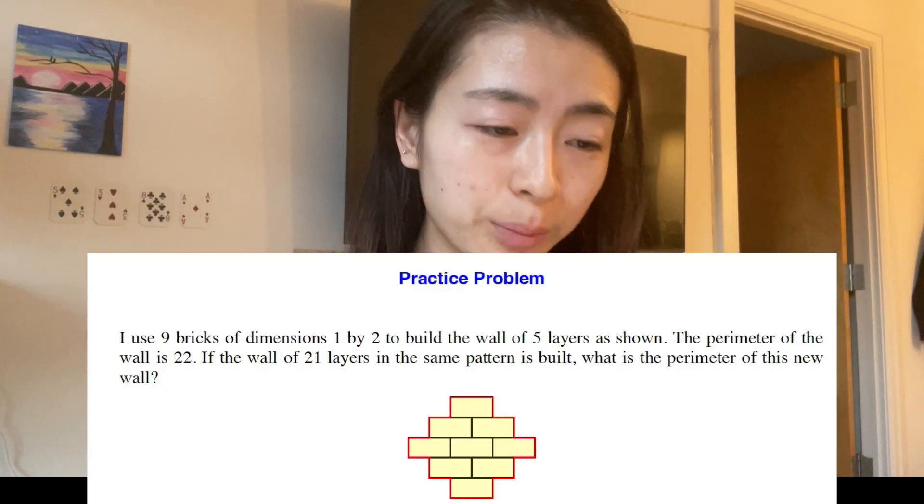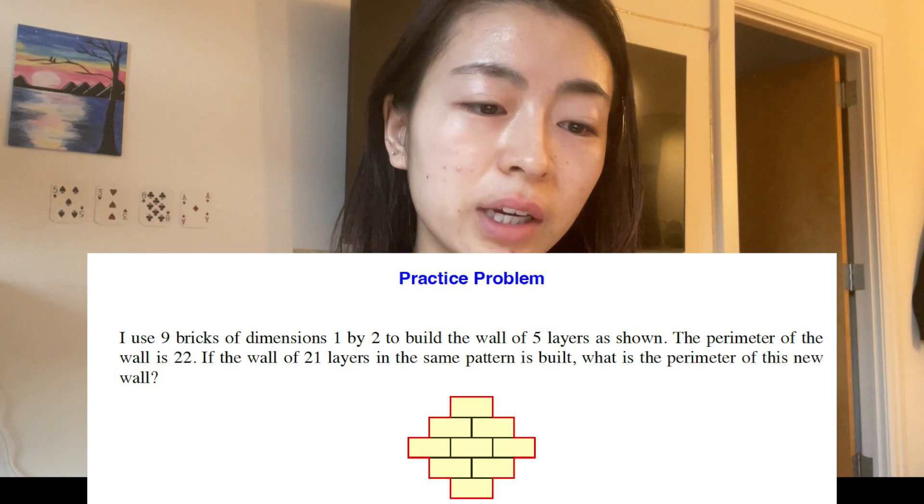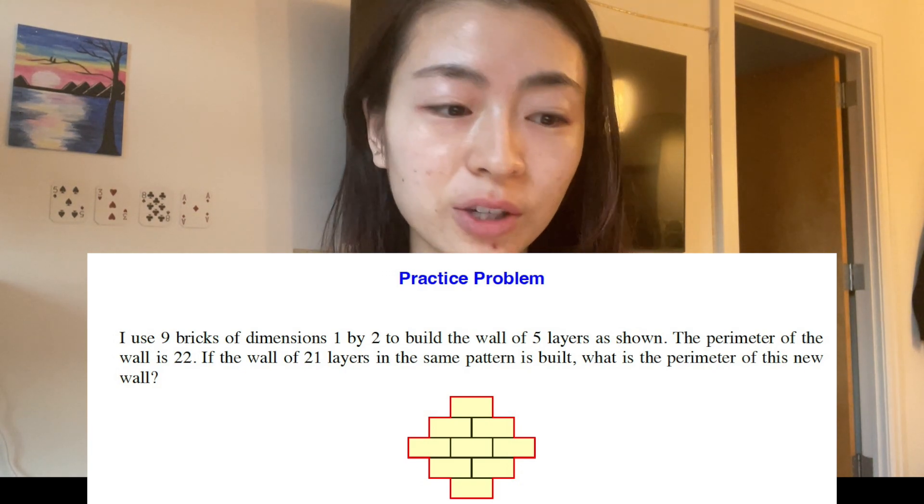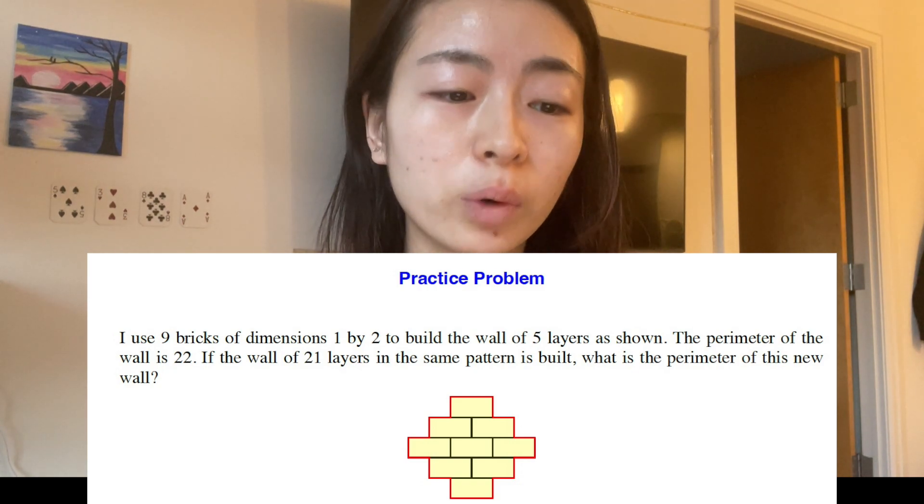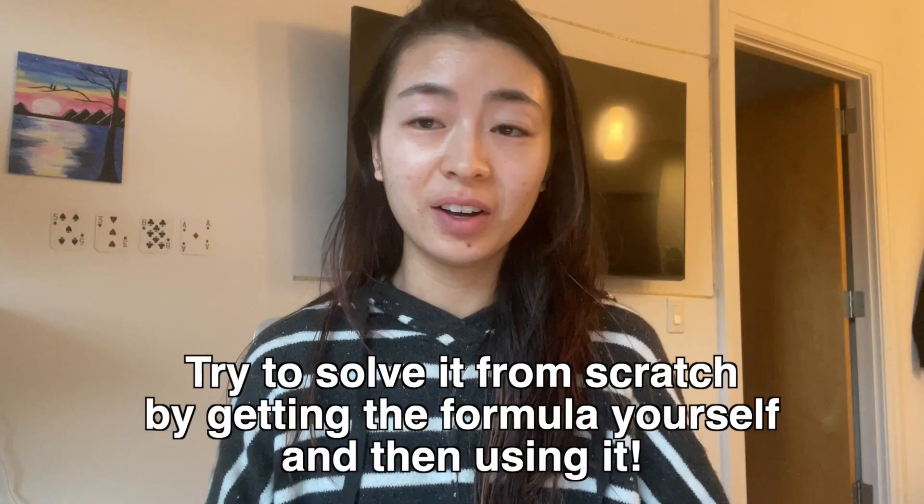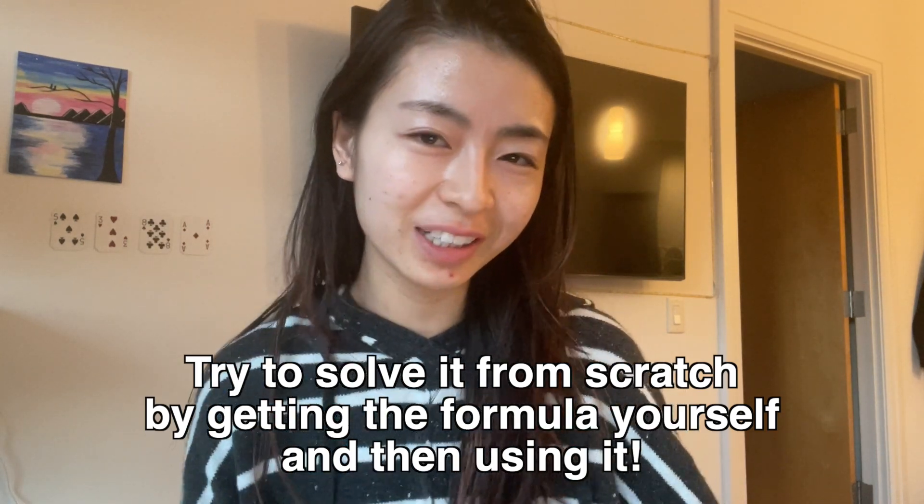Practice problem. I use nine bricks of dimensions one by two to build a wall of five layers as shown. The perimeter of the wall is 22. If the wall of 21 layers in the same pattern is built, what is the perimeter of this new wall? Okay, so pause and try it. Leave your answer in the comments to see if you really understand.